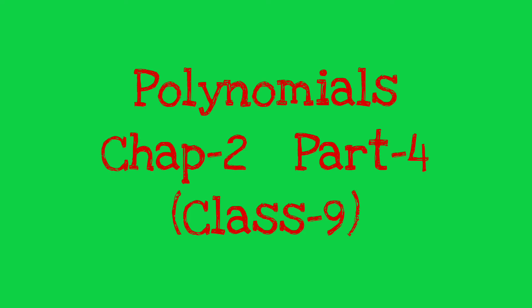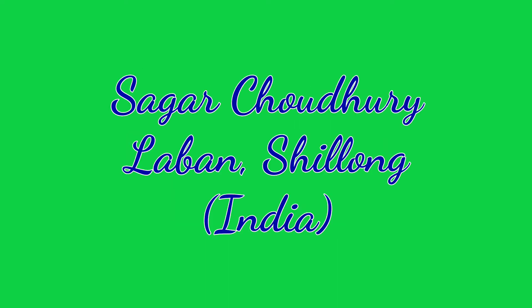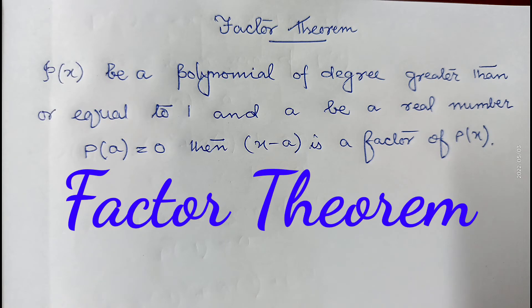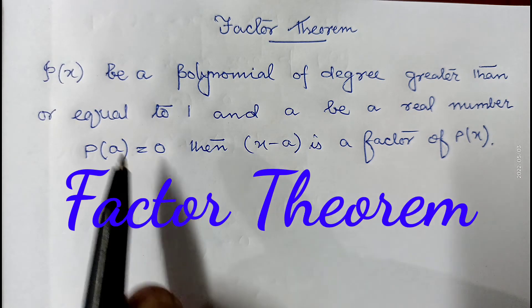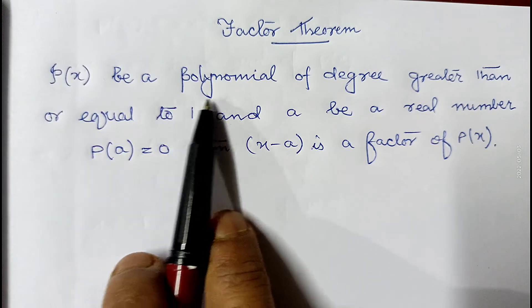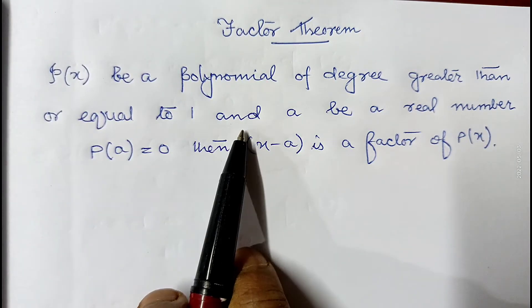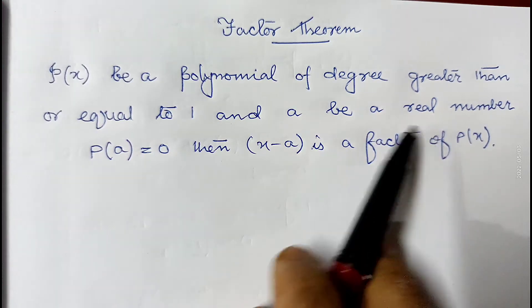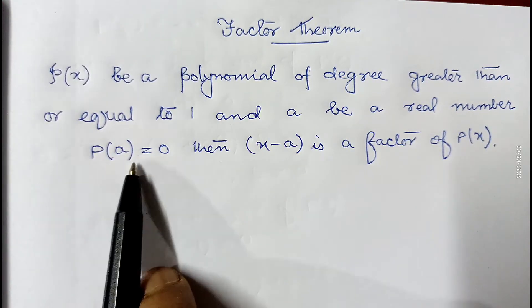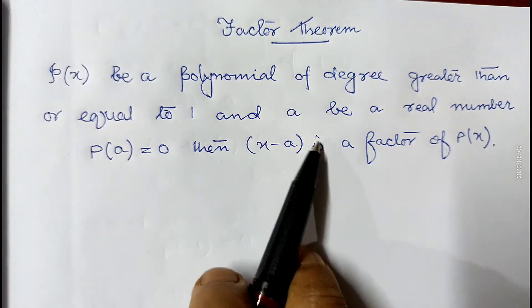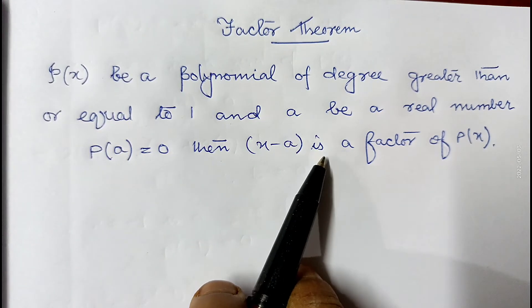Hello viewers. In the last video of this chapter on polynomials, I explained the remainder theorem and worked through sums of Exercise 2C. Today I am going to explain the factor theorem. According to the factor theorem, suppose p(x) is a polynomial of degree greater than or equal to 1, and suppose 'a' be a real number. If p(a) equals 0, then x minus a is a factor of p(x). This is the statement of the factor theorem.